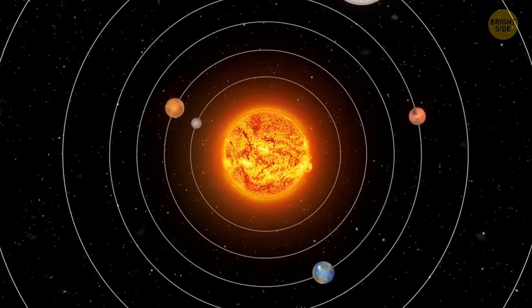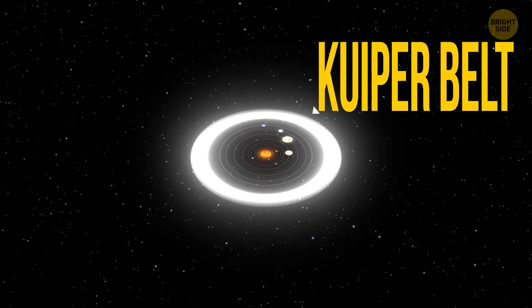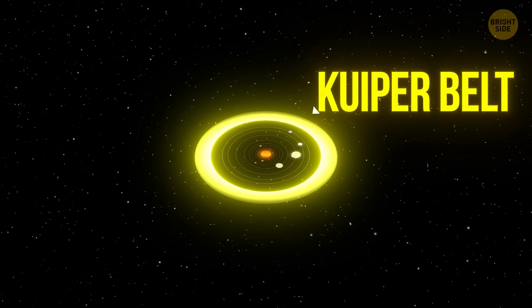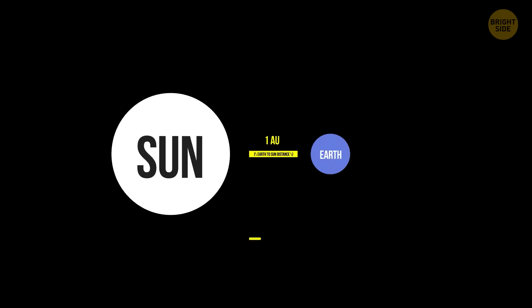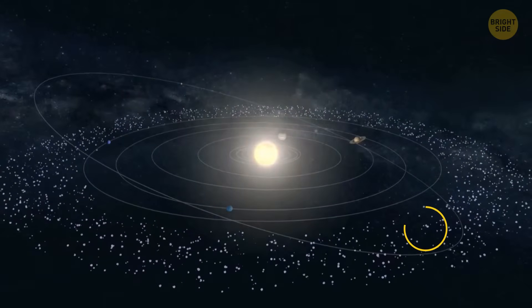Look at this giant donut-shaped region far away from Earth, beyond the orbit of Neptune. We're talking about a distance of more than 2.5 billion miles. It's the Kuiper Belt, and something eerie and bizarre is happening there.